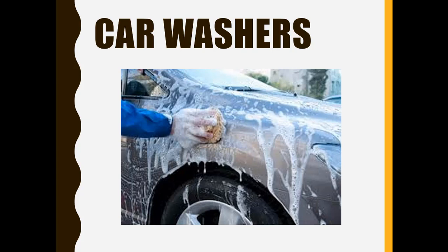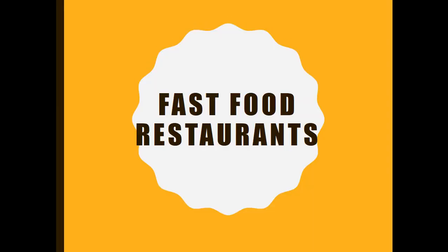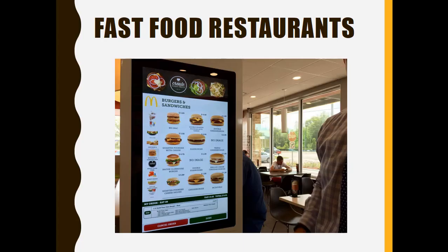Likewise, another industry very susceptible to cost is the fast food industry. Just like I showed you the Chikirin from China being used in restaurants, in the United States we now have all sorts of kiosks. At the Bowling Green McDonald's on Scottsville Road by the interstate, we have kiosks where you order your food. At Panera on Campbell Lane, you walk in and order through this interface rather than ordering from a person.